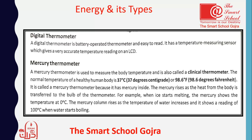The normal temperature of a healthy human body is 37 degrees Celsius or 98.6 degrees Fahrenheit. Yeh aap ne yaad karna hai. Normal body ka jo temperature hota hai woh 37 degrees centigrade hota hai, ya phir 98.6 Fahrenheit hota hai. Yeh aapko MCQs ki shape mein aa sakta hai ya phir fill in the blanks ki form mein bhi aa sakta hai.